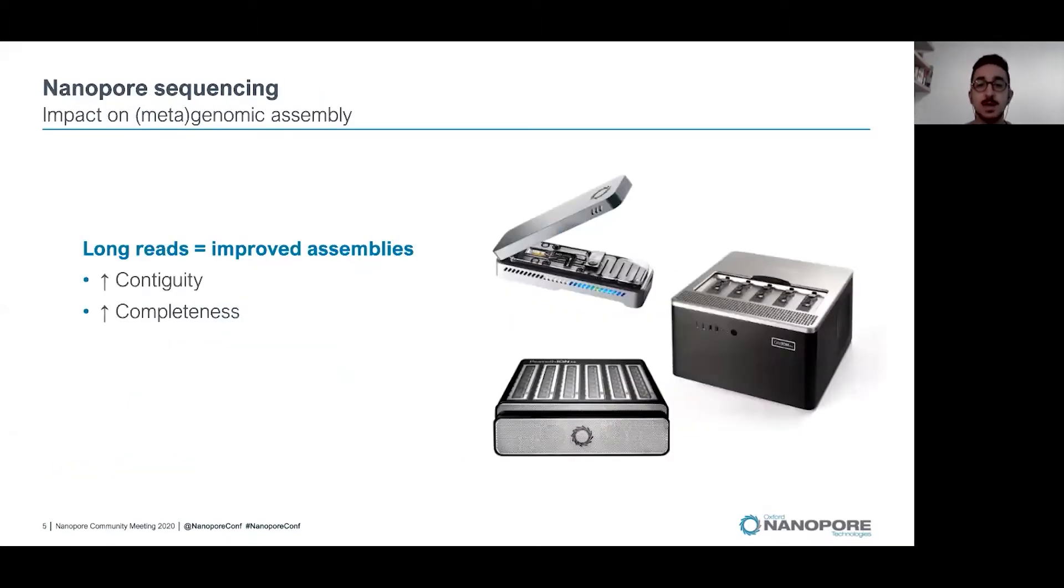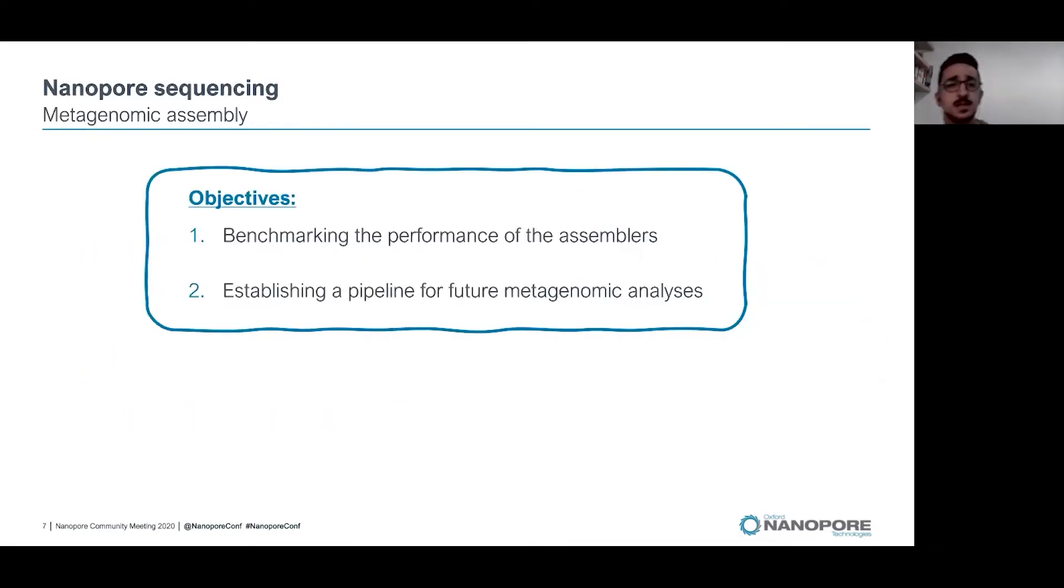Long reads generated by Oxford Nanopore Technologies platforms have demonstrated to improve these assemblies in terms of higher continuity and completeness. This has stimulated the development of new assembly tools specifically designed to handle the nanopore data. The objectives of our work was to benchmark the performance of these assemblers when using metagenomic data and to establish a pipeline for future metagenomics analysis in our lab using mock communities.